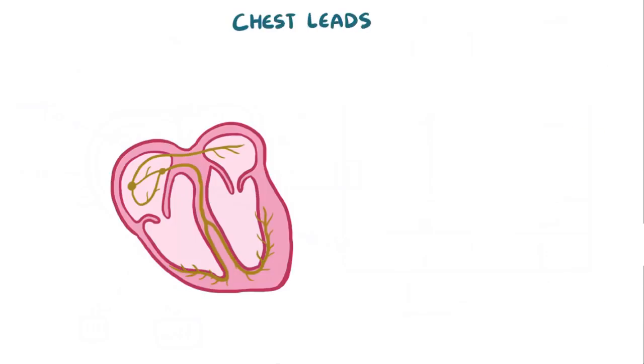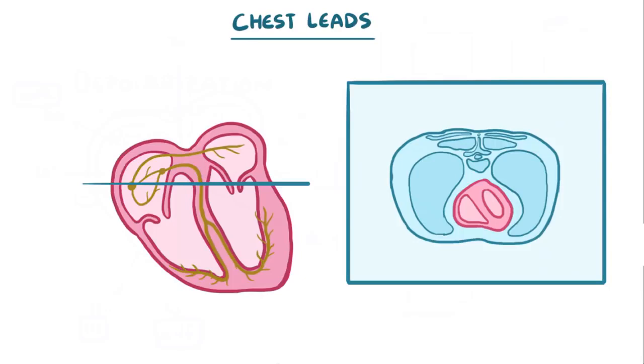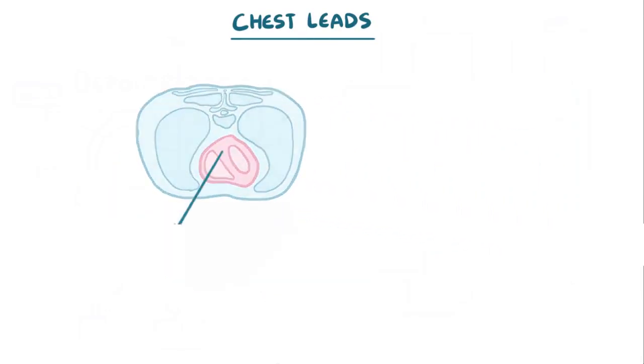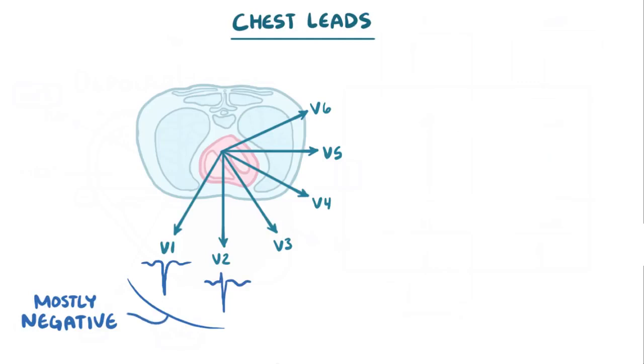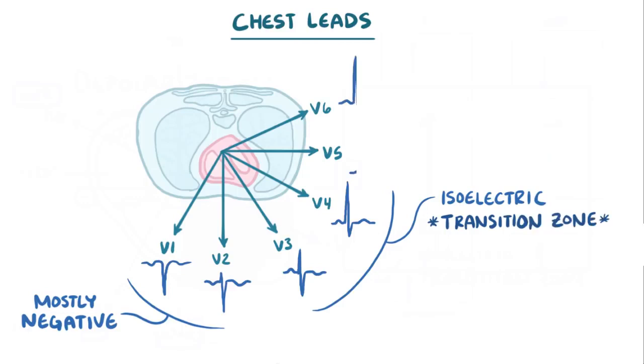Now, let's switch gears and talk about the chest leads, which essentially view the heart in a different plane. Now, looking down at the heart, we have leads V1, V2, V3, V4, V5, and V6. Normally the QRS complex is negative in leads V1 and V2. It's isoelectric in leads V3 and V4, which is called the transition zone, and positive in leads V5 and V6.